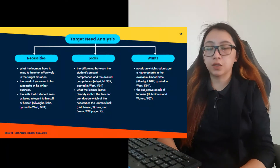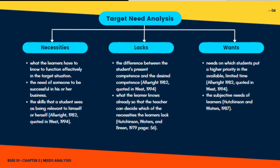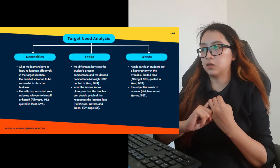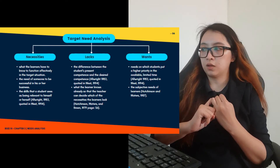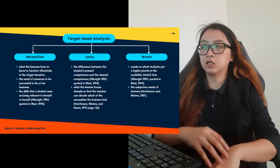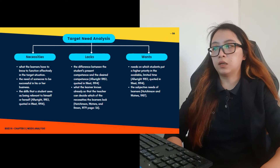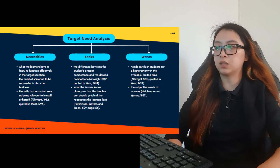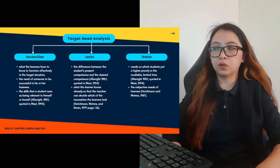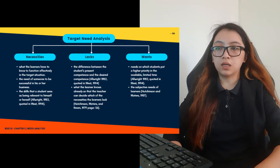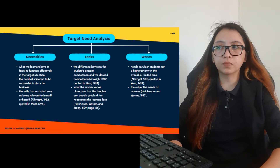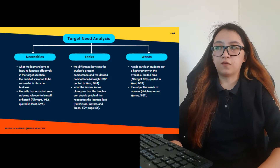Under target needs analysis are three different terms: necessities, lacks, and wants. Necessities is what the learners have to know to function effectively in the target situation — it is the need of someone to be successful in his or her business. As defined by Allwright (1982), quoted in West (1994), necessities are the skills that a student sees as being relevant to himself or herself. For example, if you will be migrating to an English-speaking country, it is a necessity for you to learn English since it will be the medium of communication there.